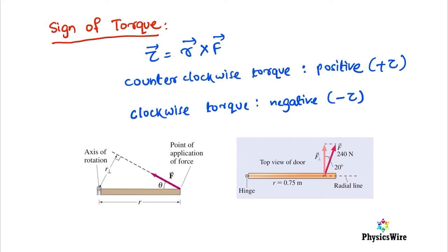Let's learn about the sign of torque. We know torque equals r cross F. Counterclockwise torque is positive — the rotation is in the opposite direction of the clock. Clockwise torque is negative; if the rotation is in the clockwise direction, the torque is considered negative.